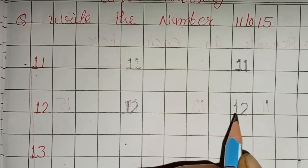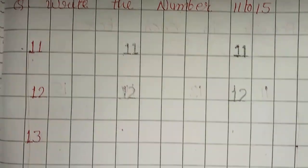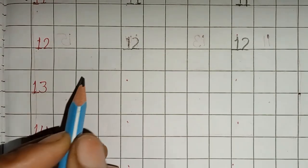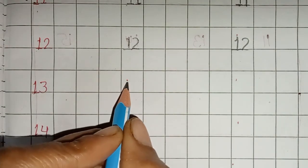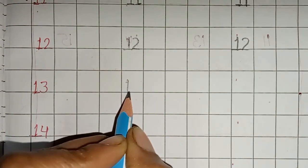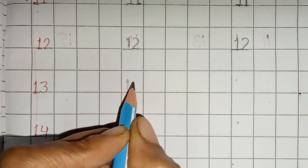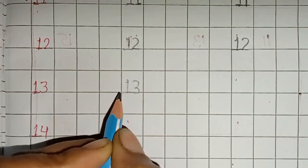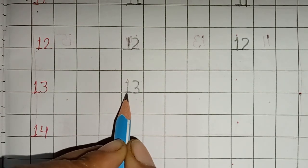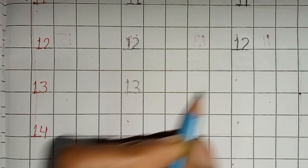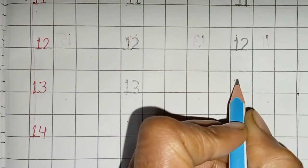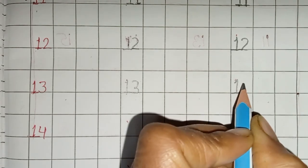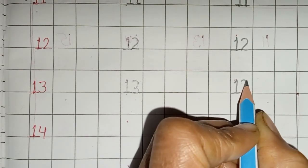Next number is 13 — one three, thirteen. For number 13: one standing line, then a small sleeping line, one slanting, and two small curves. This is number 13.